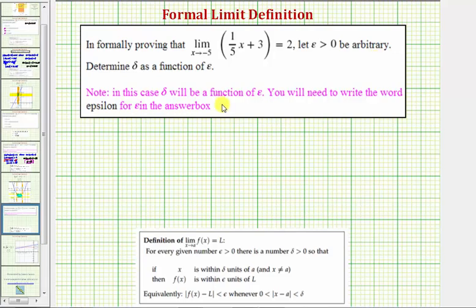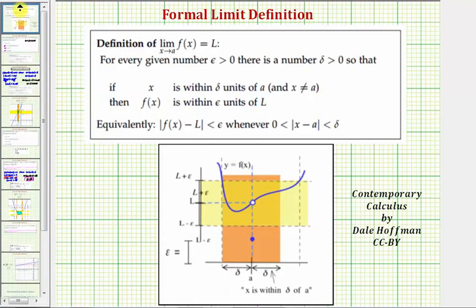This question involves the formal definition of a limit, which states the limit as x approaches a of f of x equals L, if for every given number epsilon greater than zero, there is a number delta greater than zero so that if x is within delta units of a, and x doesn't equal a,